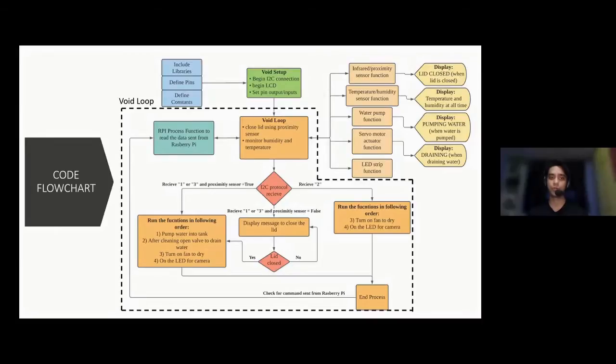Next, we look at the Arduino code flowchart. We begin with the inclusion of libraries, definition of pins and constants in void setup. Connection establishment is made between Raspberry Pi and the Arduino through I2C protocol. Next, we also initialize the LCD and set the pins to either inputs or outputs based on the requirements.